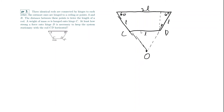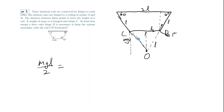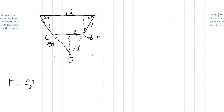We balance torques on rod CD about the point where the extensions of rods AC and BD meet — call it O. The only torques are from mg at hinge C and the applied force F at D. The torque from mg is mg·(l/2). To minimize F, apply it perpendicular to CD, giving moment arm l. So mg·(l/2) = F·l, which gives F = mg/2. The rod masses pass through O and contribute zero torque.